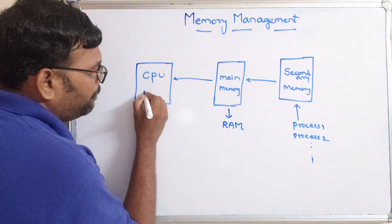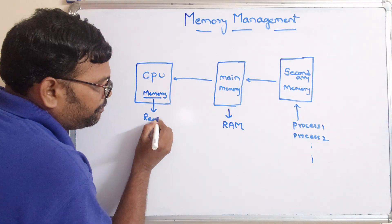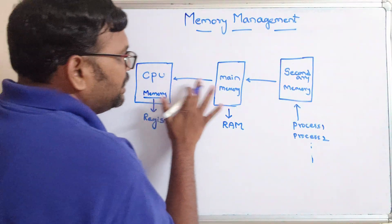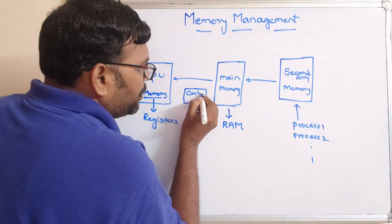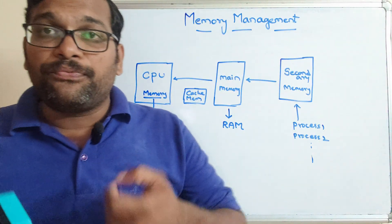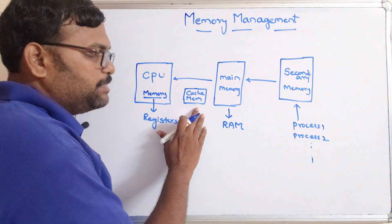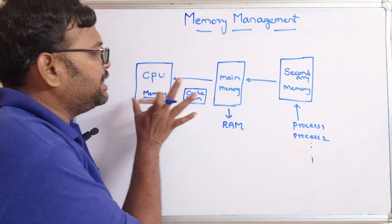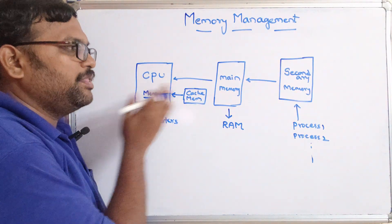Inside the CPU there will be one more memory — we call them registers. Registers are very small in size. And in between the main memory and the CPU, there is one more memory called cache memory. Cache memory stores the frequently used instructions or processes. This cache memory sits between the main memory and the CPU, so accessing it is somewhat faster than main memory.